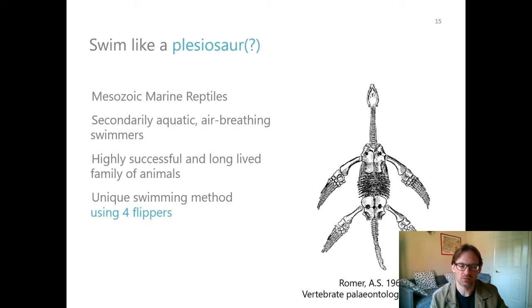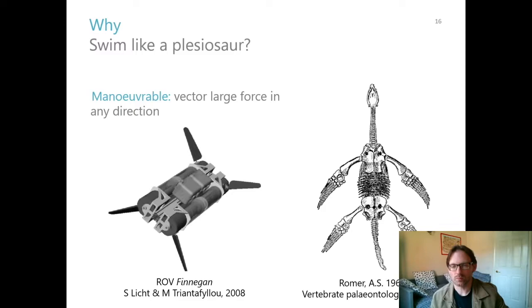This was a very successful branch of animals that lived for a very long time. But what's interesting for us is that they had this unique swimming method of using four big flippers. This is in contrast to turtles or the sea lions we saw before, where the front flippers were the only ones that really mattered. The back ones are tiny. Here with the plesiosaur we've got four big maneuvering flippers.